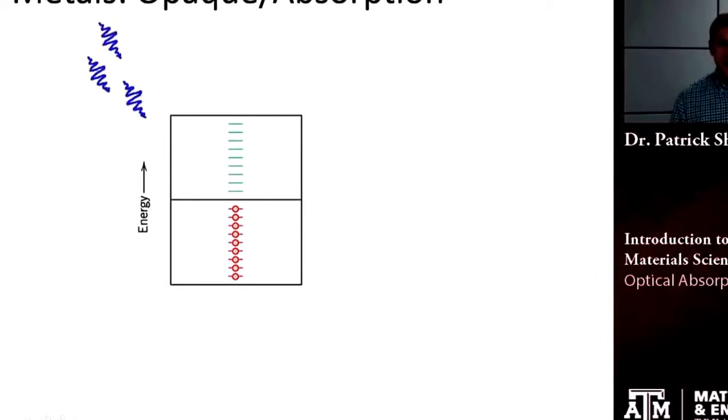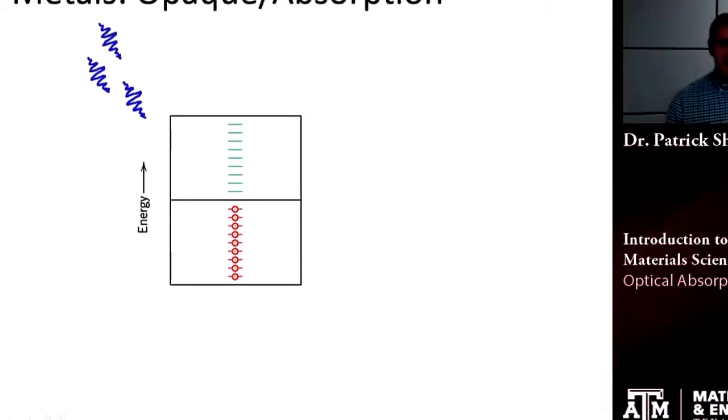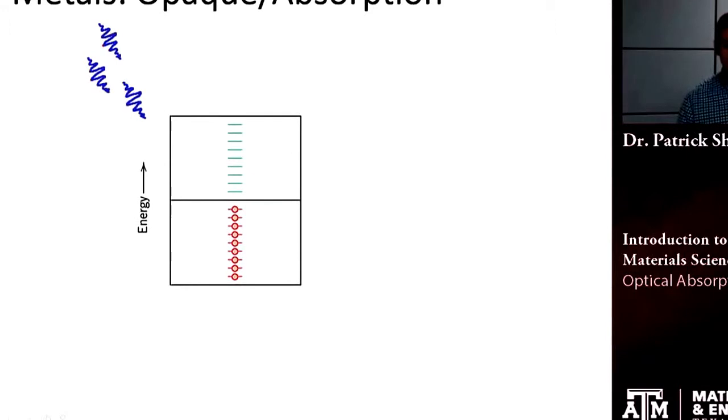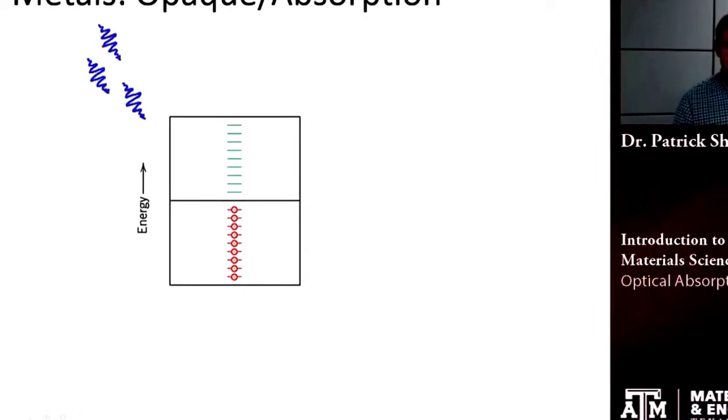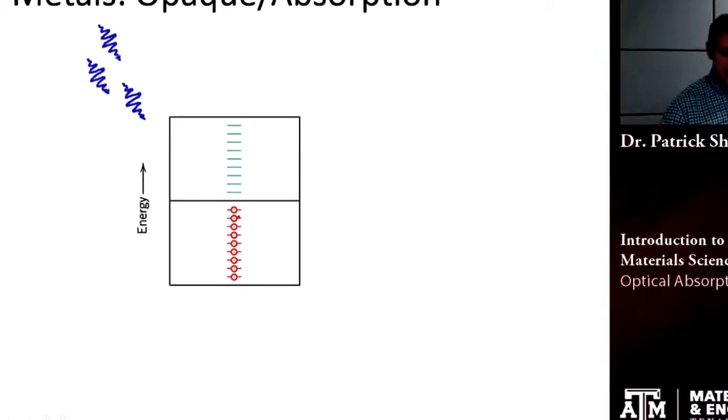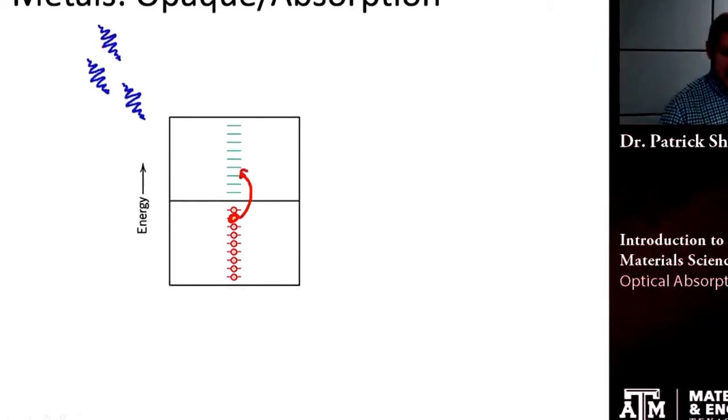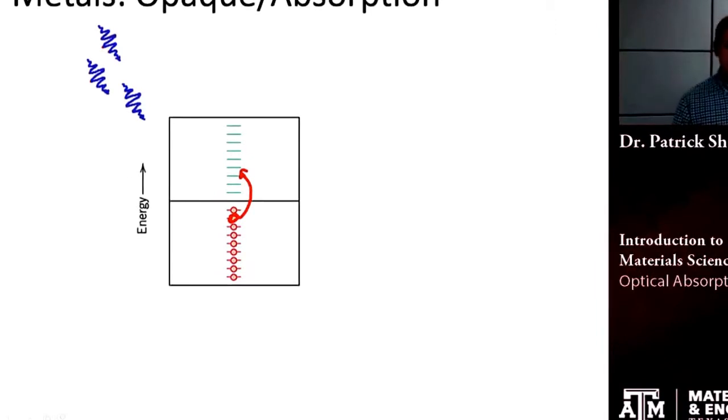First, let's think about the metal case, so we have some light coming in. Remember, each of these packets of light, each of these photons, has some amount of energy. For the light to get absorbed, it has to interact with an electron and kick that electron up to some higher energy level.